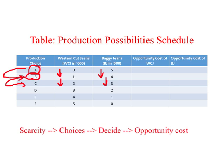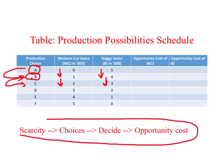All of this happens because of scarcity. Remember: whenever you are in a situation where resources are scarce, you will have a number of choices or options available, you will be forced to decide, and when you decide you incur a cost called opportunity cost.